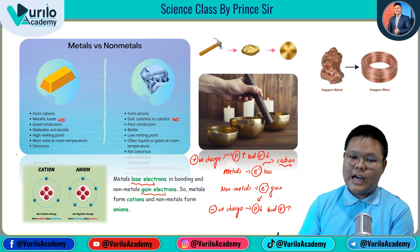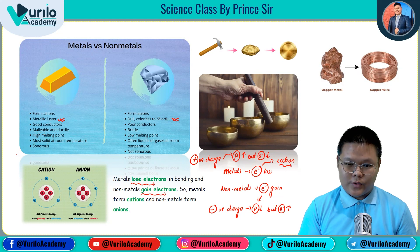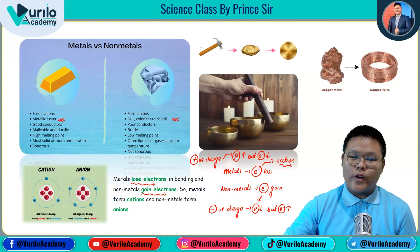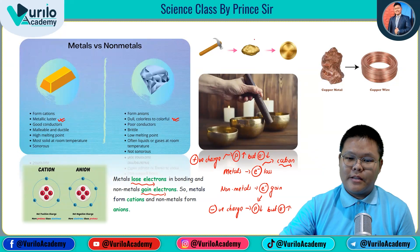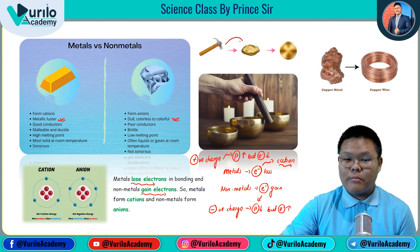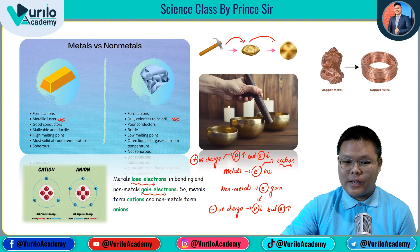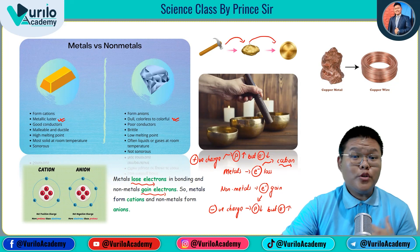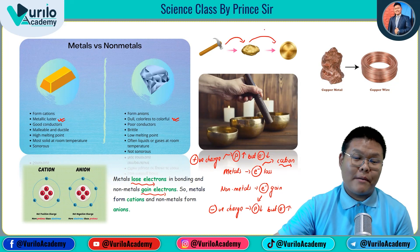Metals are malleable and ductile — when you hammer a metal, its shape can be changed into sheets (malleable) or drawn into thin wires (ductile).